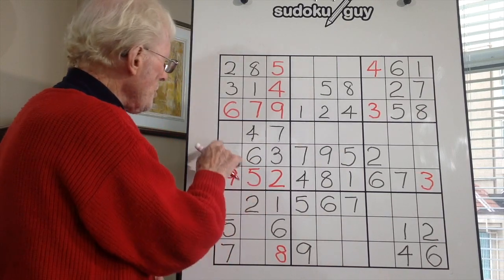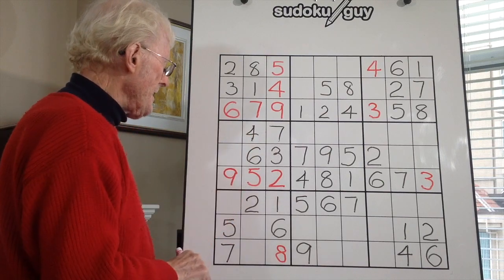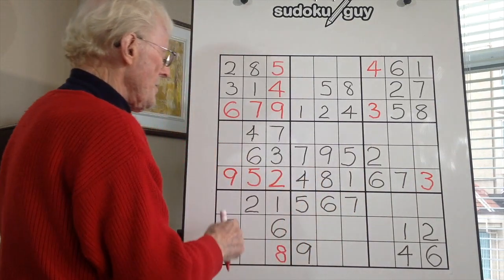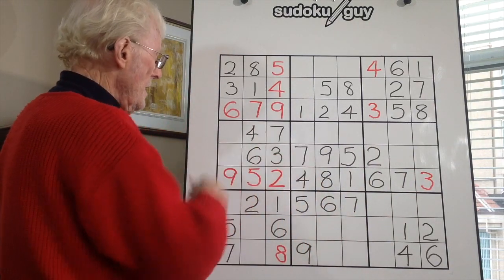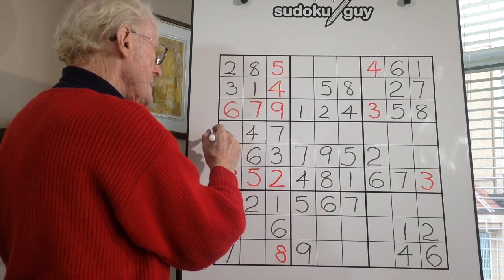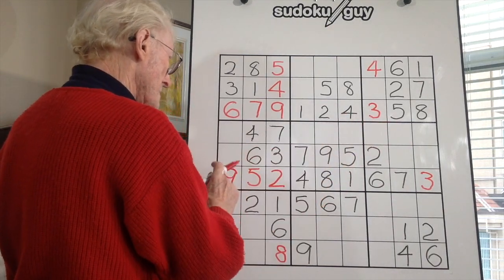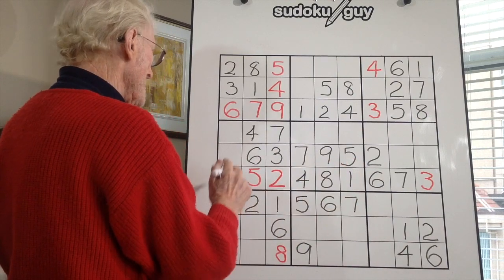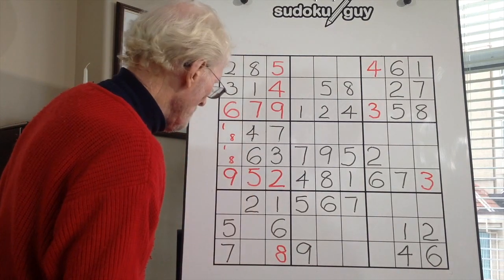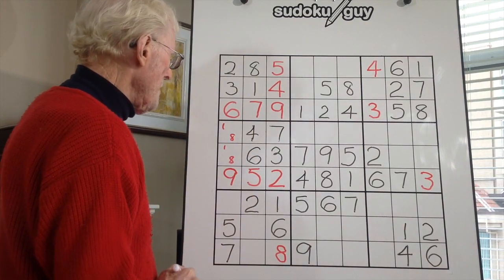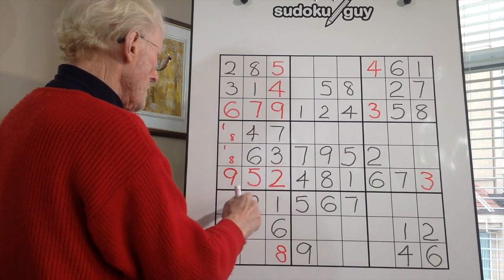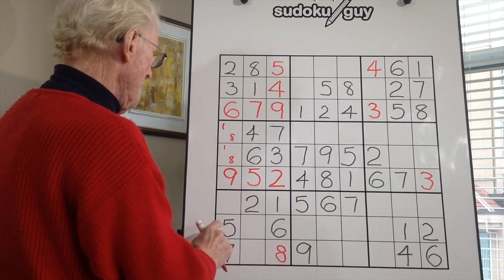Now we've only got two left in this section. The two remaining numbers that are no longer in the block are a one and an eight. So we can put a one and an eight. Looking across here — can that help us at all? No, it can't. So we'll put one and eight there, and one and eight there, and see what happens. Let's look at the ramifications: two, two, two — correct. Five, five, five, five — correct, self-checking here.